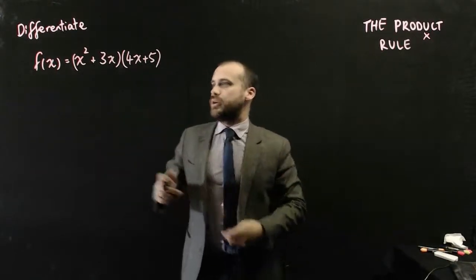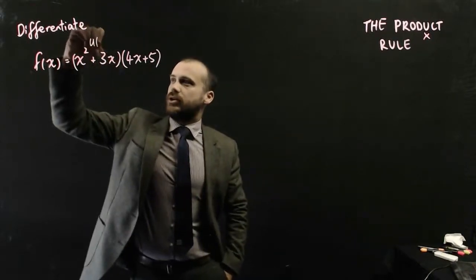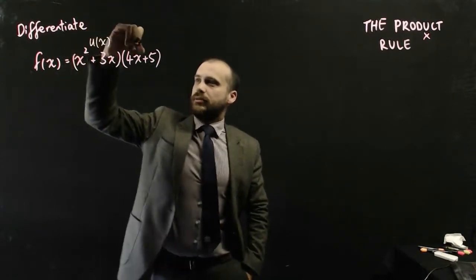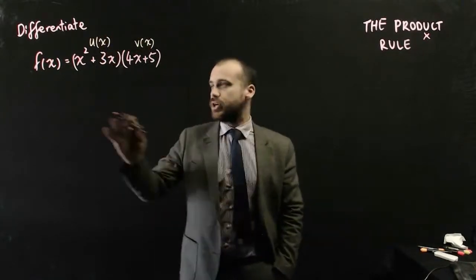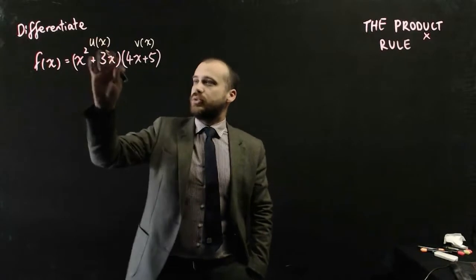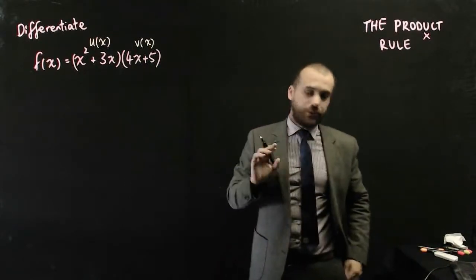So what do we do? Well, we call each of these functions something new. So I'm going to call this u(x), and I'm going to call this function v(x). So I've got f(x) is equal to u(x) times v(x), and now let's create a little formula for our product rule.